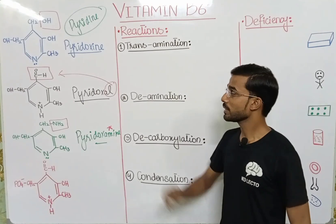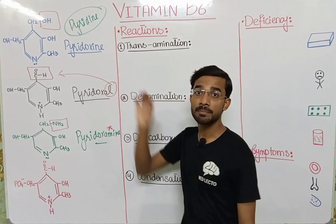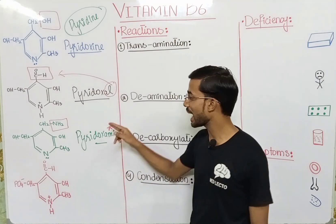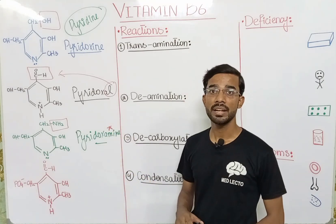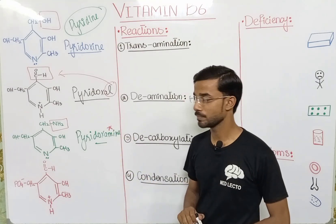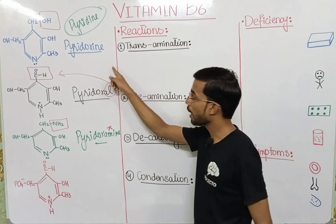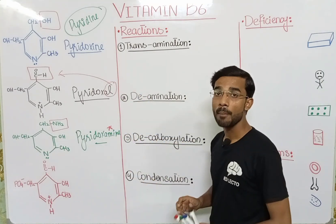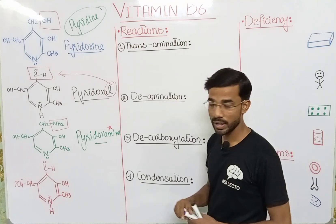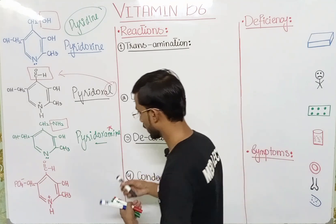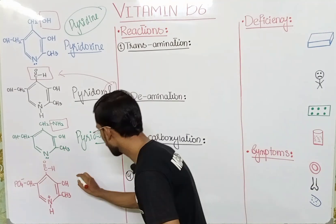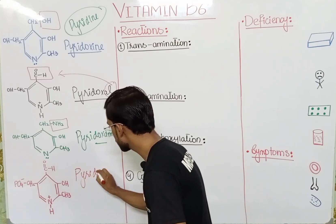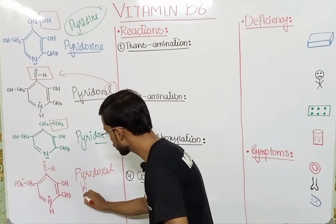Pyridoxine is mainly obtained from plants. But Pyridoxal and Pyridoxamine are actually obtained from animals. These three compounds are actually the precursors of Pyridoxal phosphate.